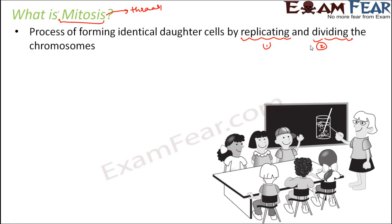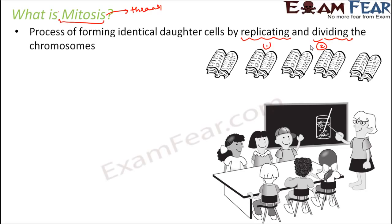You can understand the process of mitosis with this simple example. Suppose a teacher is teaching a class with about six students. She wants to distribute notes but has only one copy. So she gets a Xerox done — multiple copies of the same notes — and distributes each copy to each student. She replicated the original document and then divided it amongst all the students. Similarly, in mitosis, the DNA gets replicated and then divided to the daughter cells.